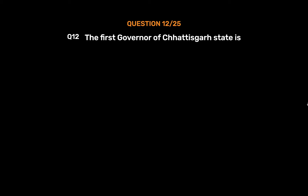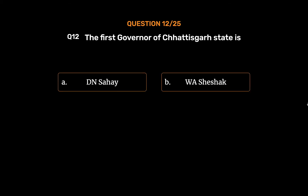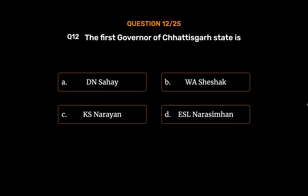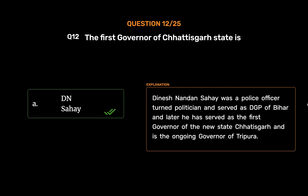Question No. 12: The first governor of Chhattisgarh state is — Option A: Dhan Sahai. Option B: W.A. Sheshak. Option C: K.S. Narayan. Option D: E.S.L. Narasimhan. The correct answer is Option A: Dhan Sahai. Dhan Sahai was a police officer turned politician and served as DGP of Bihar. Later he served as the first governor of the new state Chhattisgarh and is also the ongoing governor of Tripura.